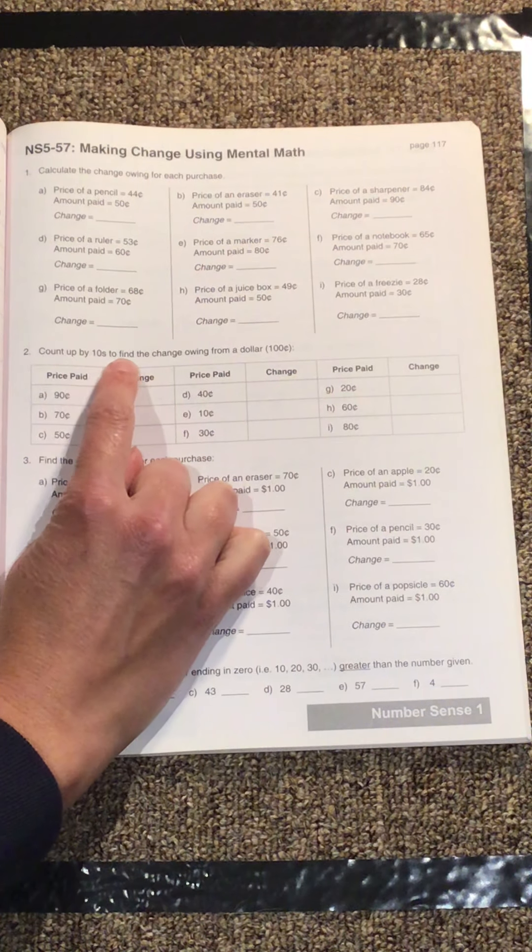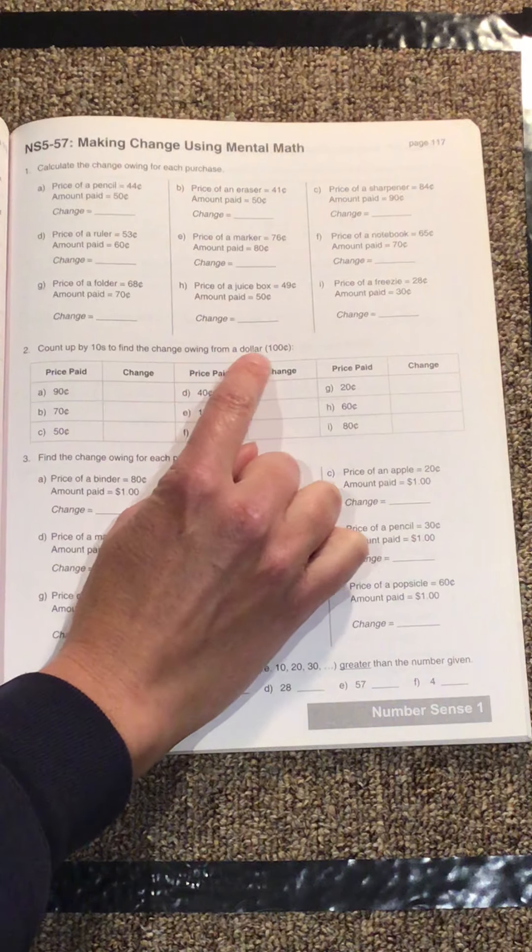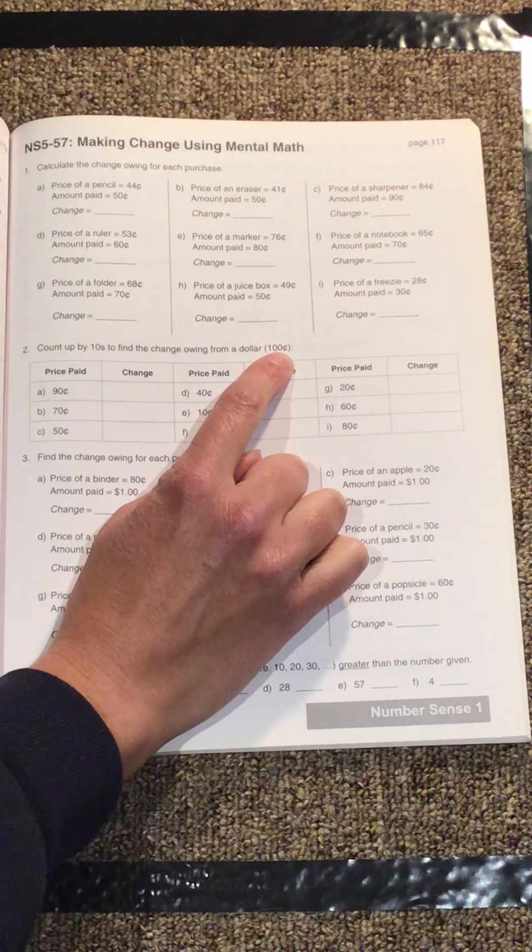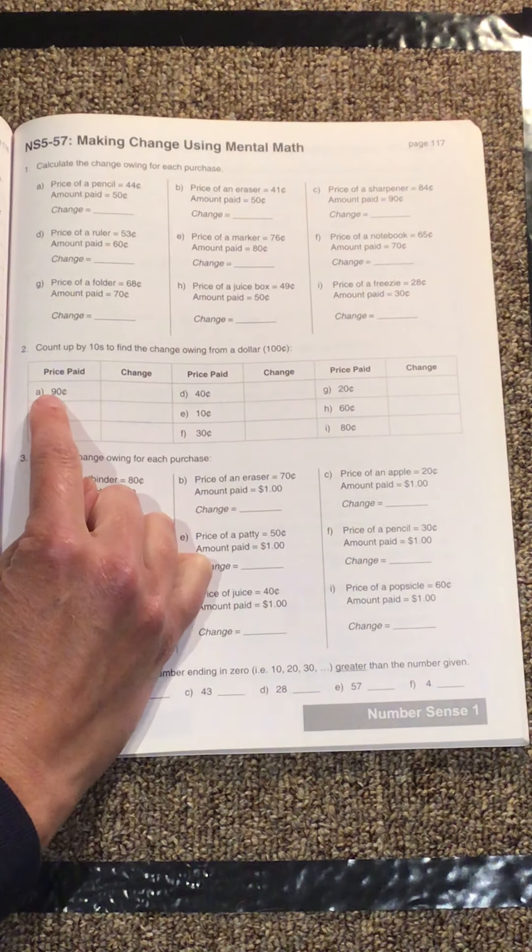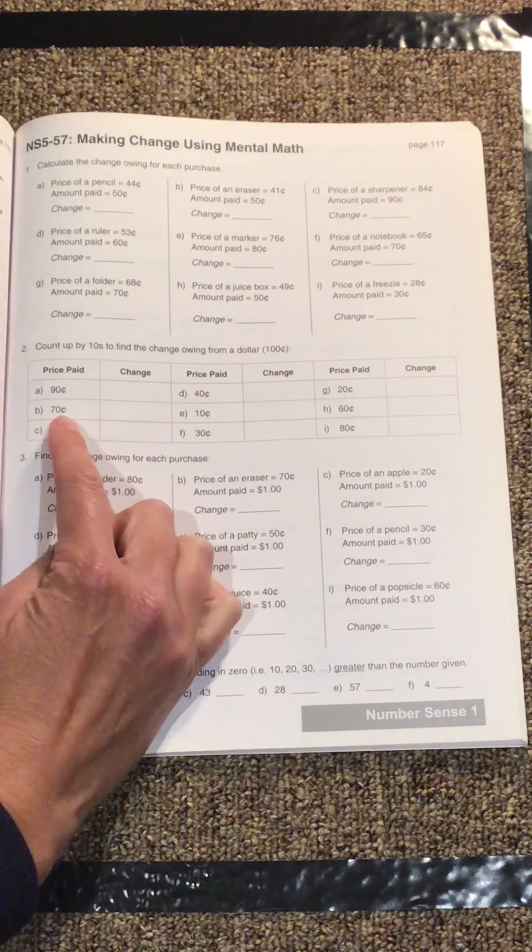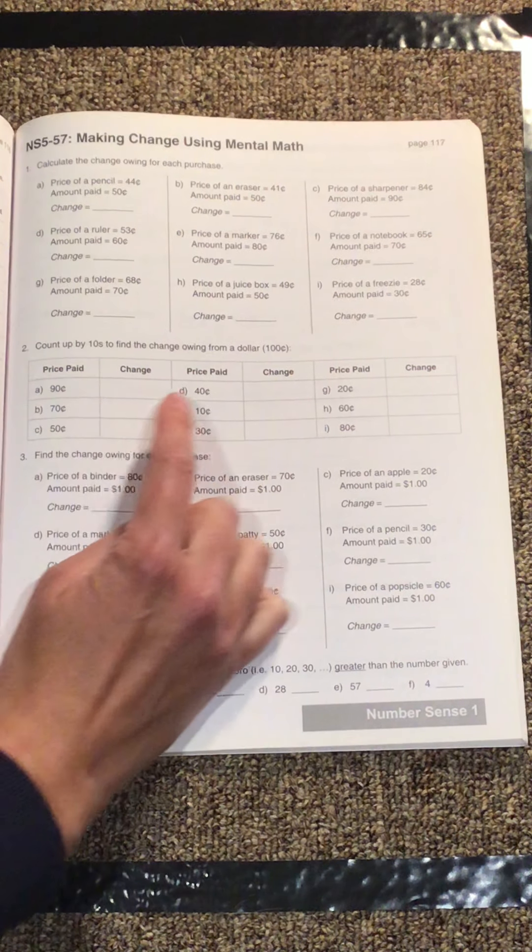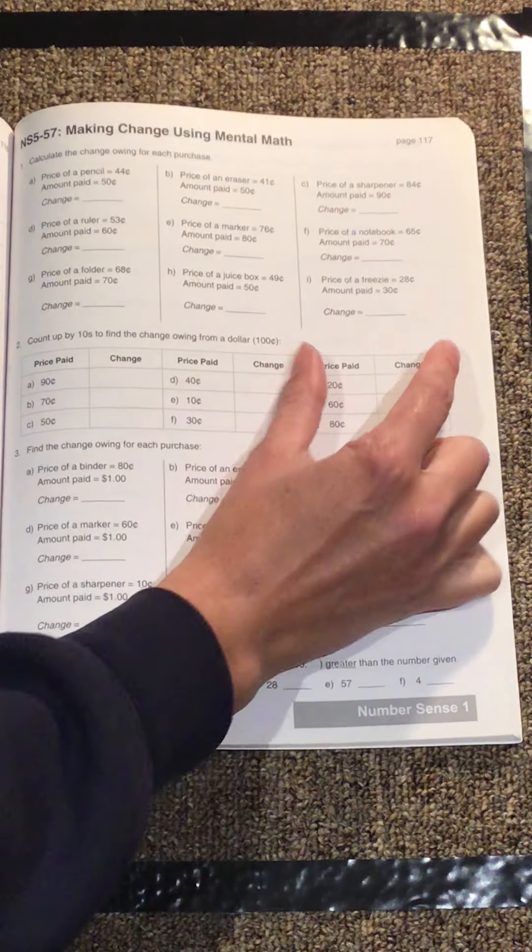Number two, count up by tens to find the change owing from a dollar. So a dollar is 100 cents. So if you paid 90 cents, what would you get back? If you paid 70 cents, and so on. Okay, so they kind of go in twos here.